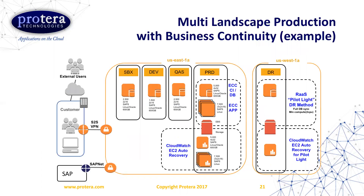EC2 Auto Recovery is like a 'poor person's HA.' The database and system data are stored persistently in EBS storage shared across compute. If a system goes down for a hardware reason, AWS automatically detects it and restarts the server in another instance — this is hardware-level recovery without needing application-level HA built in. This feature is not on by default, but it's very easy to enable and costs nothing.